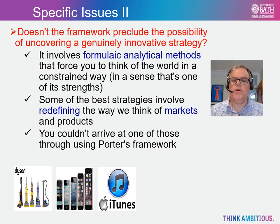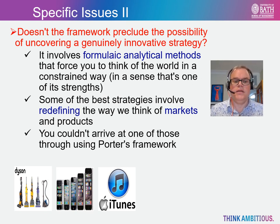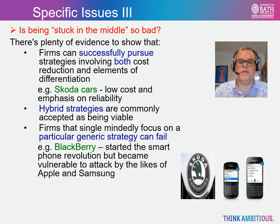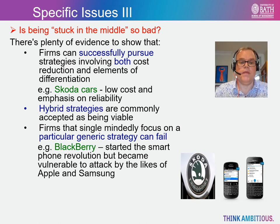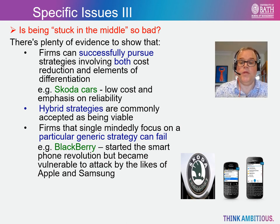Yet some of the best strategies involve redefining the way we think of markets and products, and you don't really arrive at one of those by using Porter's framework. For example, Apple revolutionized the mobile phone market by essentially redefining it from a portable communication market — a device that simply facilitates calls and texts — to one that is essentially about handheld portable computing. Similarly, Dyson's bagless hoovers redefined the domestic cleaning market. Finally, Porter cautions firms against being stuck in the middle, but is it really so bad? There are several examples of firms successfully pursuing elements of cost reduction and product differentiation, for instance Skoda cars remain low cost but have recently established a reputation for being reliable. Moreover, firms that single-mindedly focus upon a particular generic strategy can fail — BlackBerry is a classic example, as it started the smartphone revolution but became vulnerable to attack by the likes of Samsung and Apple because it focused on a differentiator strategy targeted at business users and ignored the wider market.